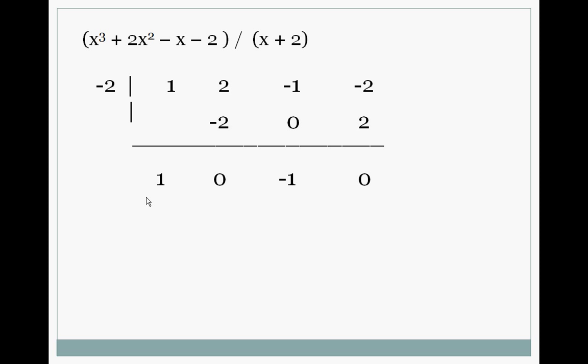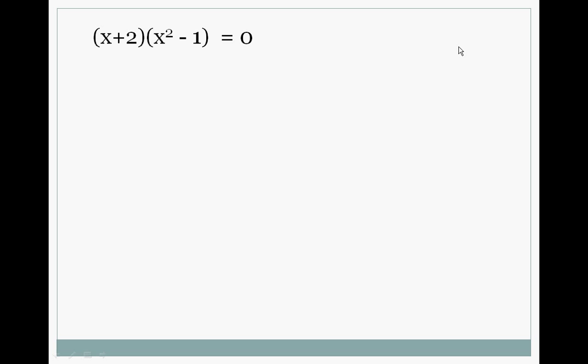It did go in evenly and it went in x²-1 times. So now we have (x+2)(x²-1) which is equal to our original polynomial. And quadratics we can factor or we can solve and this one we can factor. It's (x+1)(x-1).